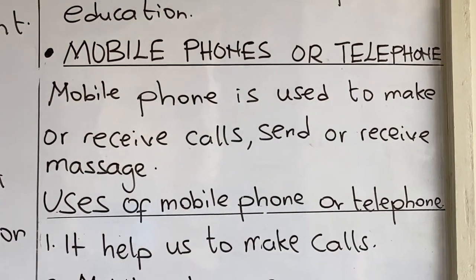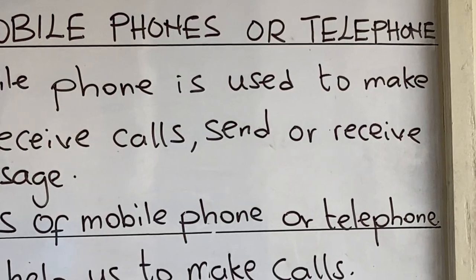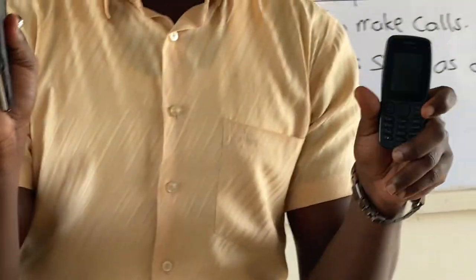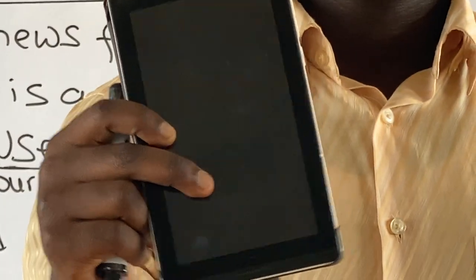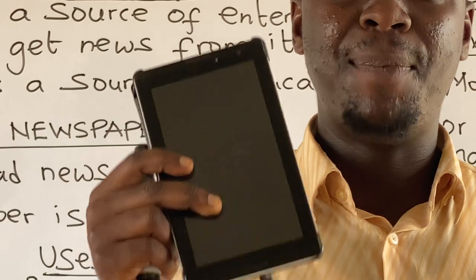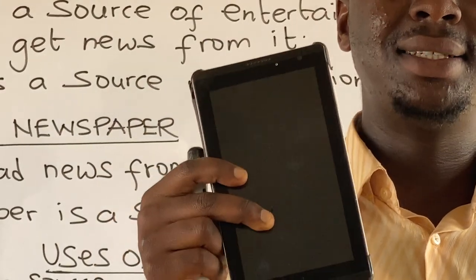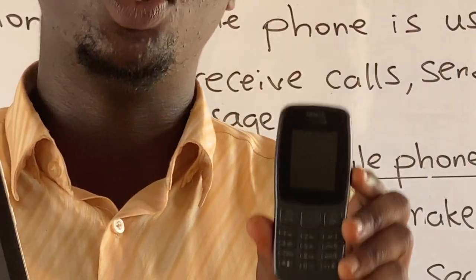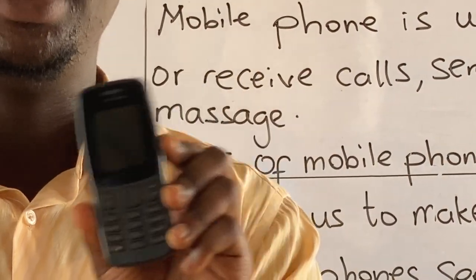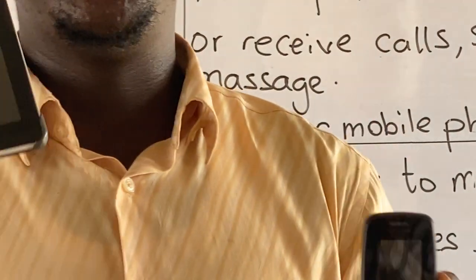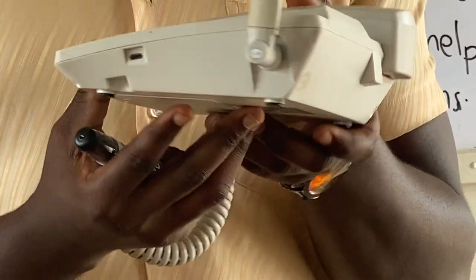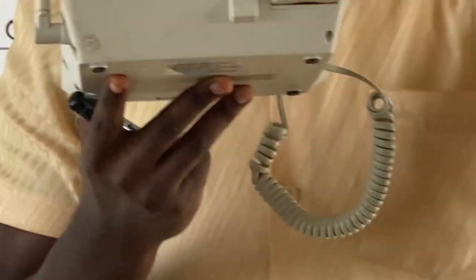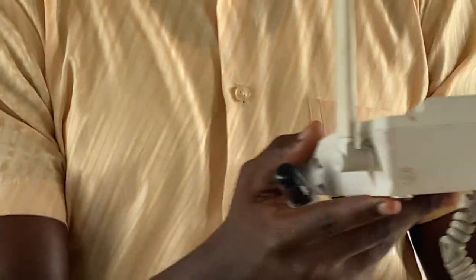The next source of information is the mobile phone or the telephone. This is a mobile phone. This is a smartphone, because it can access the internet apart from making calls and sending messages. This is also a mobile phone used for making calls and sending messages alone — it cannot access the internet, so it is not a smartphone. We also have the telephone, used at home or at the office.